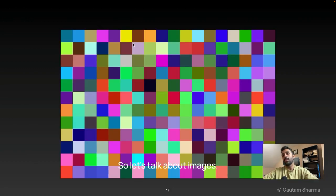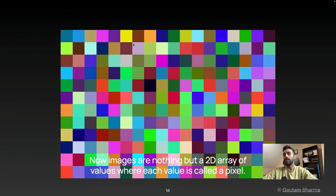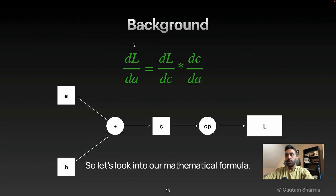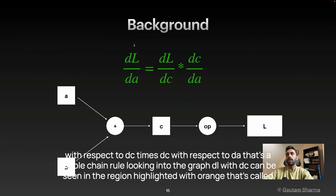So let's talk about images now. Images are nothing but a 2D array of values where each value is called a pixel. So let's look into our mathematical formula now.